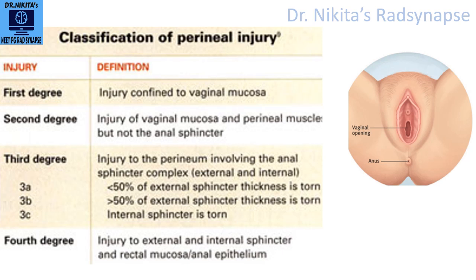Looking at this image, from anterior to posterior you can see the vagina, then the perineal muscles, then the anus — that is the anal sphincter — and then the rectum or the anal epithelium. The first degree tear is just confined to the vaginal mucosa. The second degree is when it goes behind and involves the perineal muscles as well, but the anal sphincter remains intact.